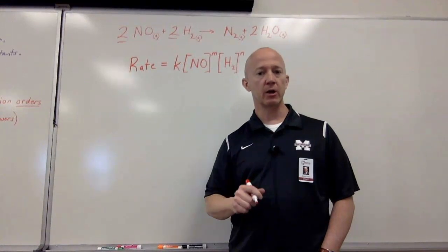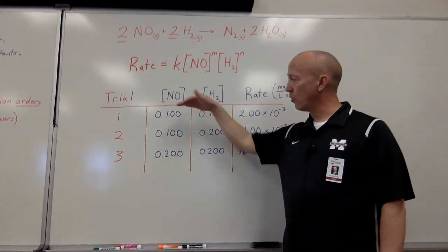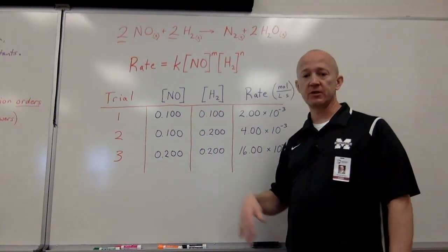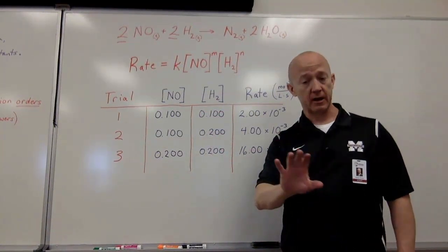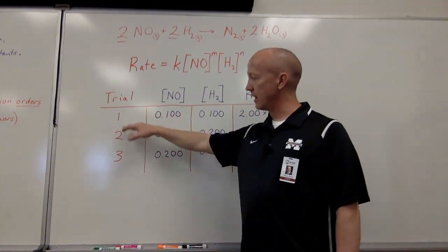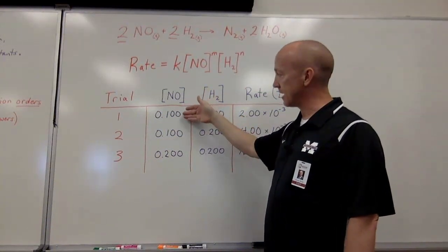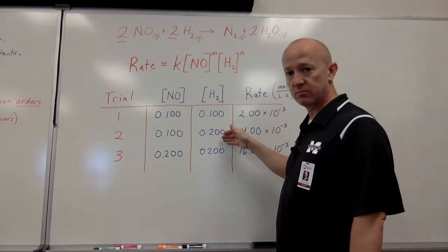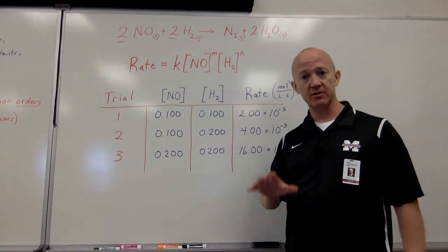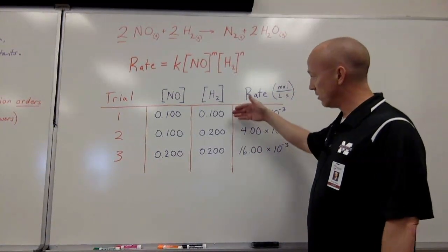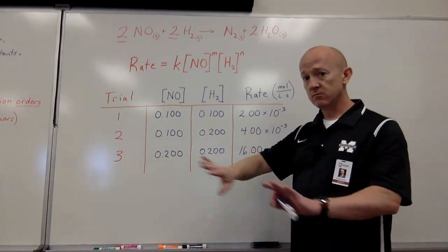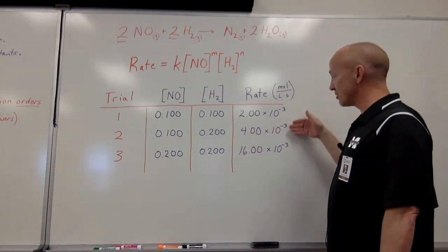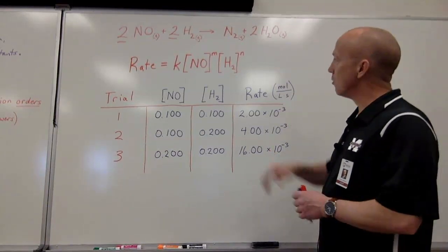Here's how the experimentation works: from one trial to the next, they pick one reactant, change it a little bit, and hold the other one steady. Looking at trials one and two, we notice that nitrogen monoxide is held at the same concentration from one trial to the next, but hydrogen is increased by a factor of two. They're testing what effect hydrogen has on the reaction rate.